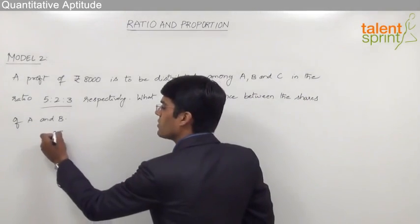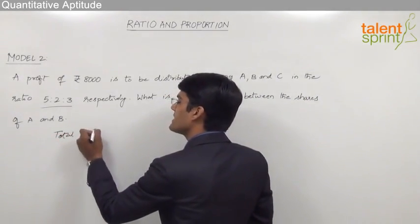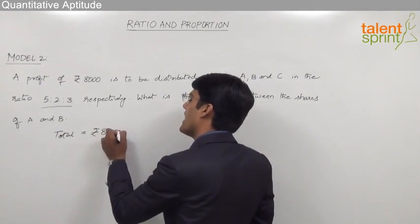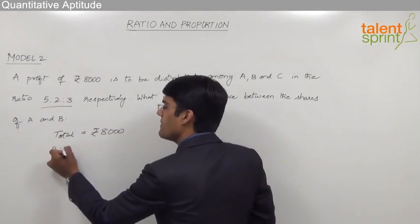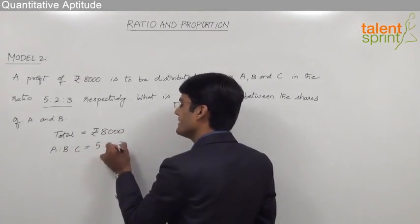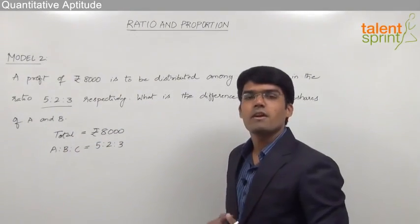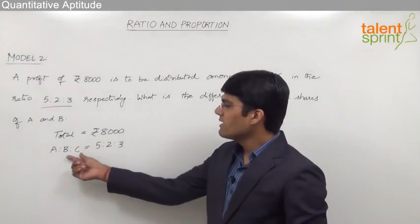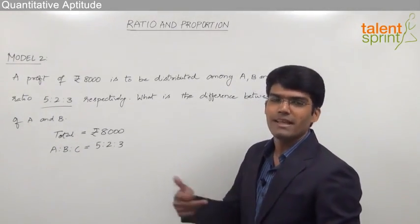As given here the total amount is rupees 8000 and the ratio among A, B and C should be 5 is to 2 is to 3. Now the general way of solving the question would be finding out the individual shares of A and B and then taking the difference.